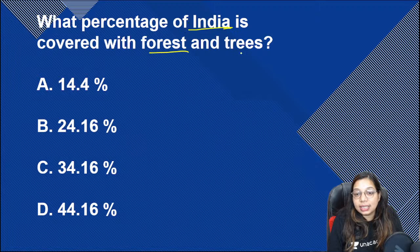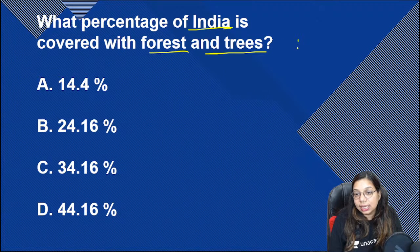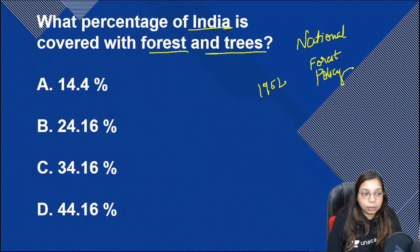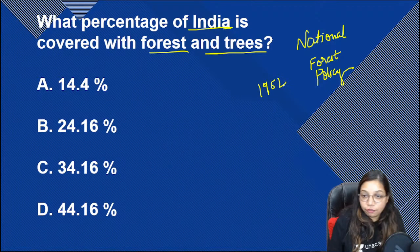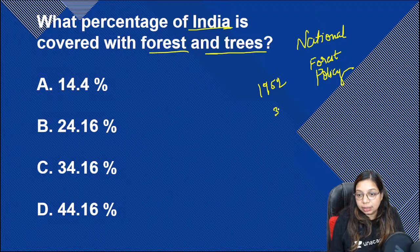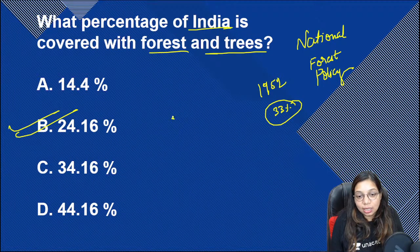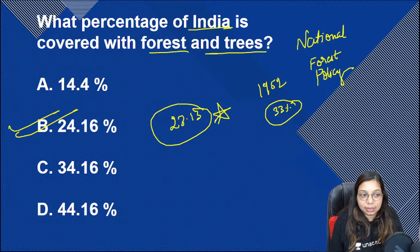How much forest cover does India have? As per the National Forest Policy of 1952, it should have been 33%, but currently it is about 24.16%. The latest data in the textbook says 23.13%. We have not been able to reach the target of 33%.